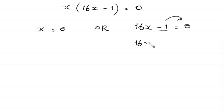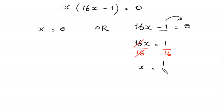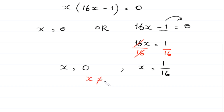Moving the negative 1 to the right-hand side gives us 16x equals 1. Dividing both sides by 16, we get x equals 1 over 16. From the other factor we get x equals 0, but as discussed earlier, x cannot equal 0, so that solution is rejected.